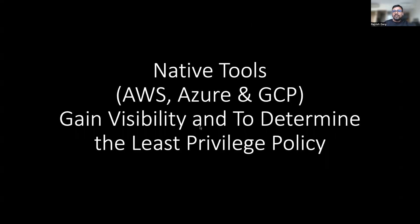That's it from my side for this first video. For the next video, we are going to talk about what native tools exist to understand who has access to what within AWS, Azure, and GCP, and how to determine the least privilege policy. Thanks a lot everyone for watching this short video.